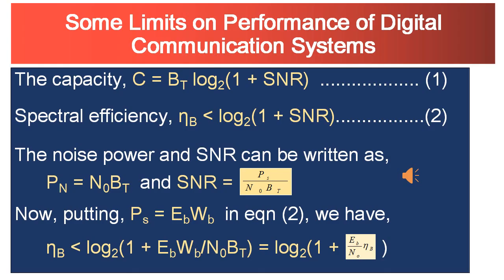The achievable spectral efficiency versus Eb/N0 is represented in the next slide. In that figure, the line represents the solutions to the equation ηB = log₂(1 + Eb/N0 · ηB). For a given Eb/N0, information theory indicates that reliable communication at spectral efficiencies below the line in the figure are achievable, while spectral efficiencies above the line are not achievable.